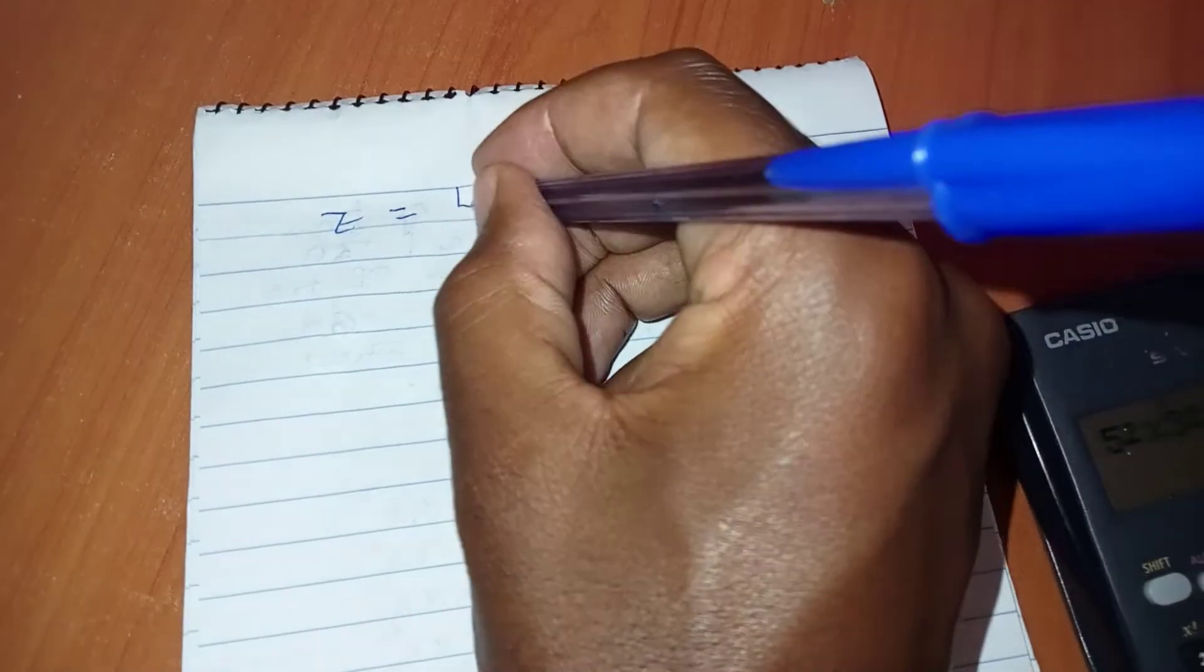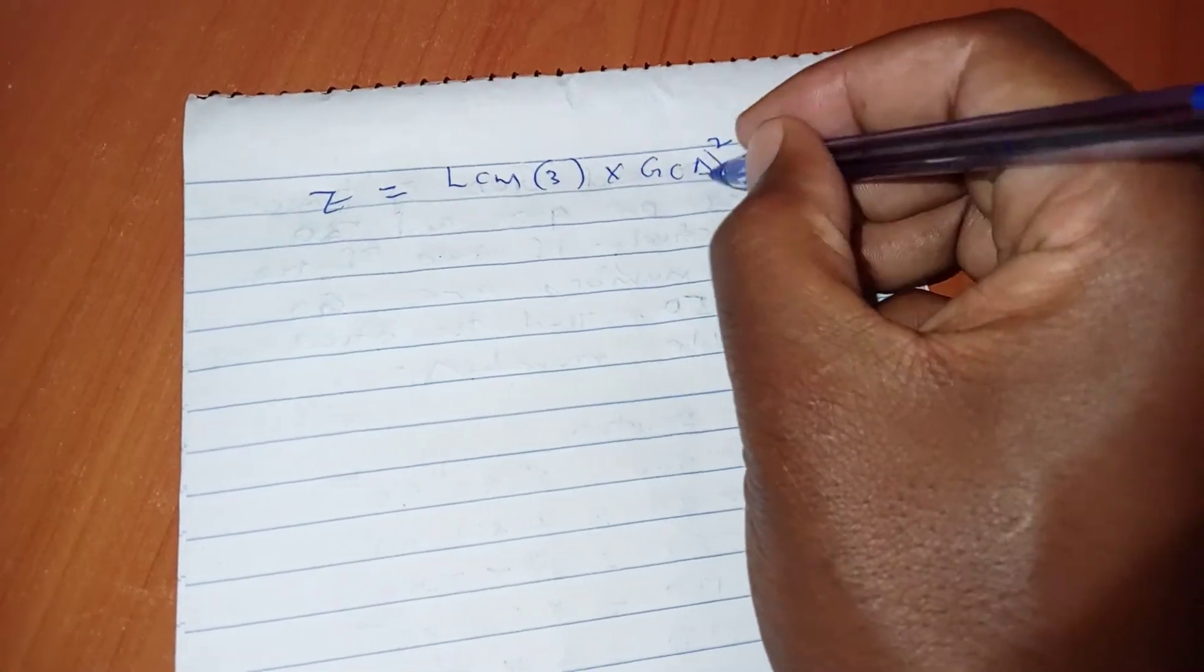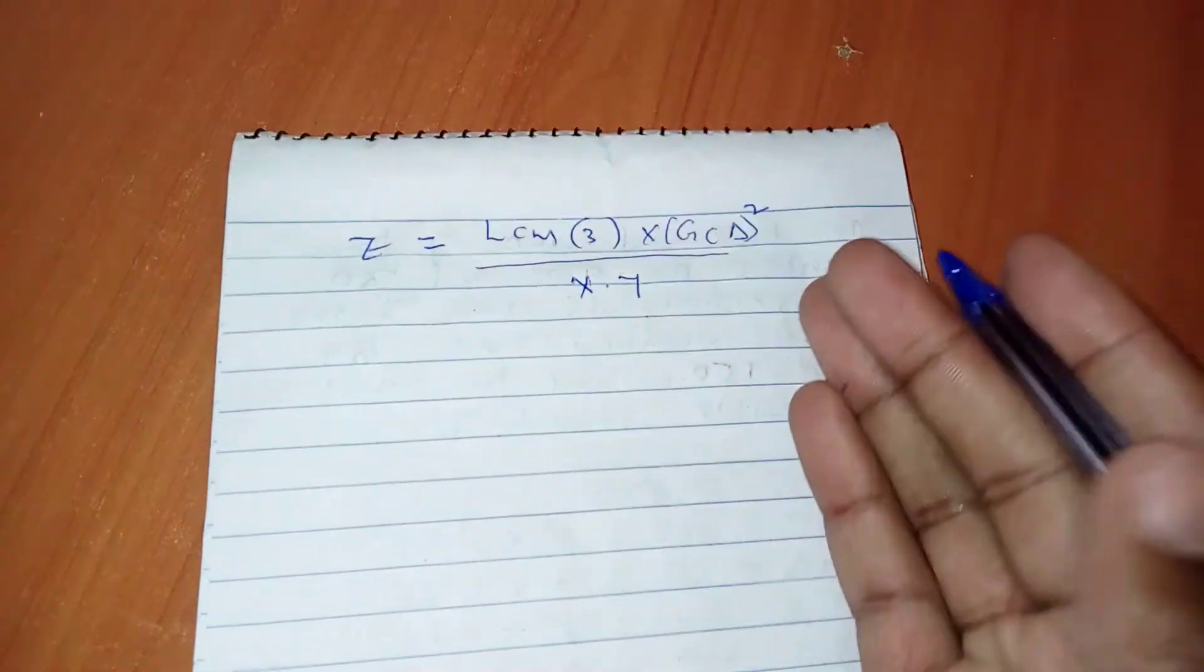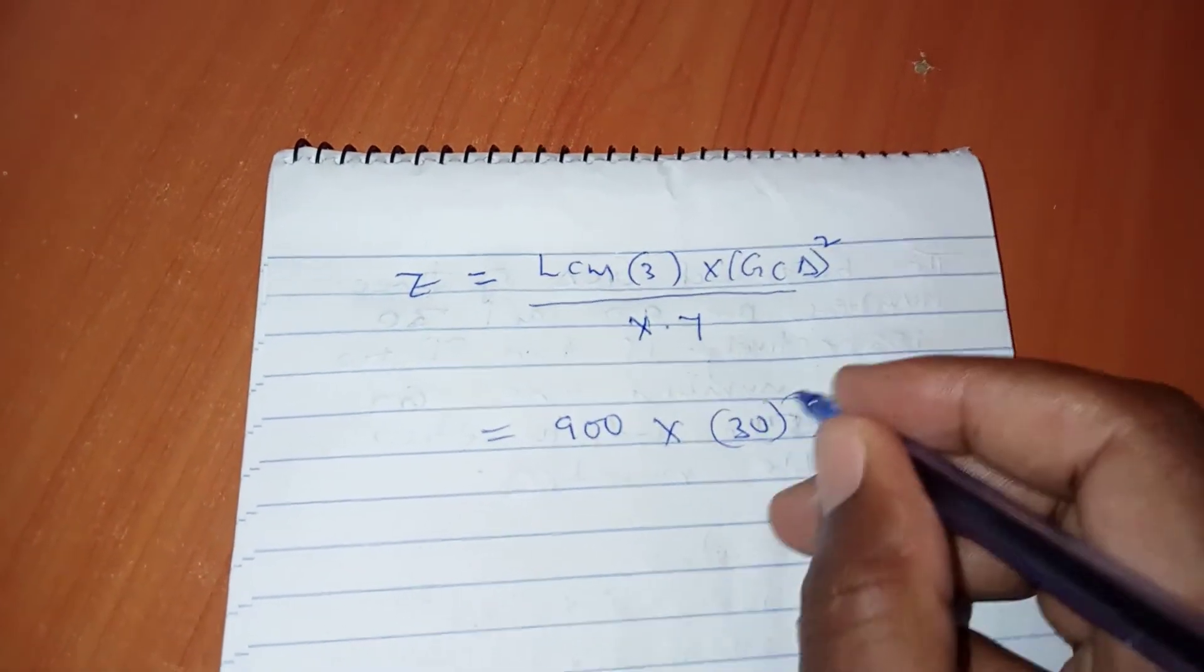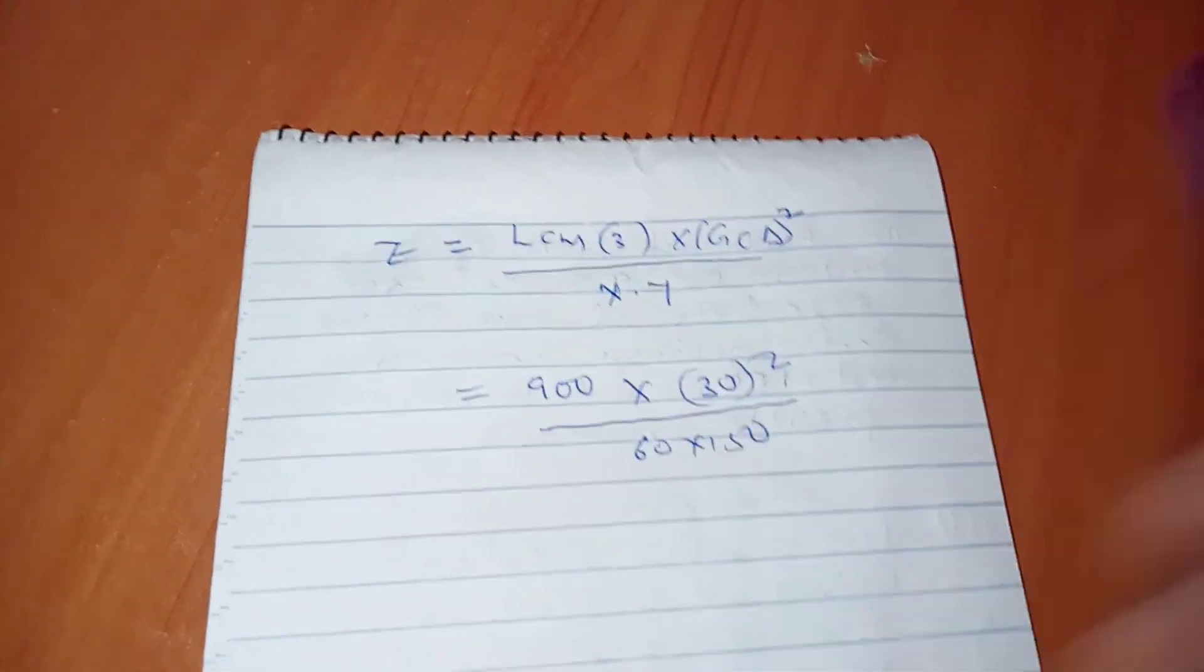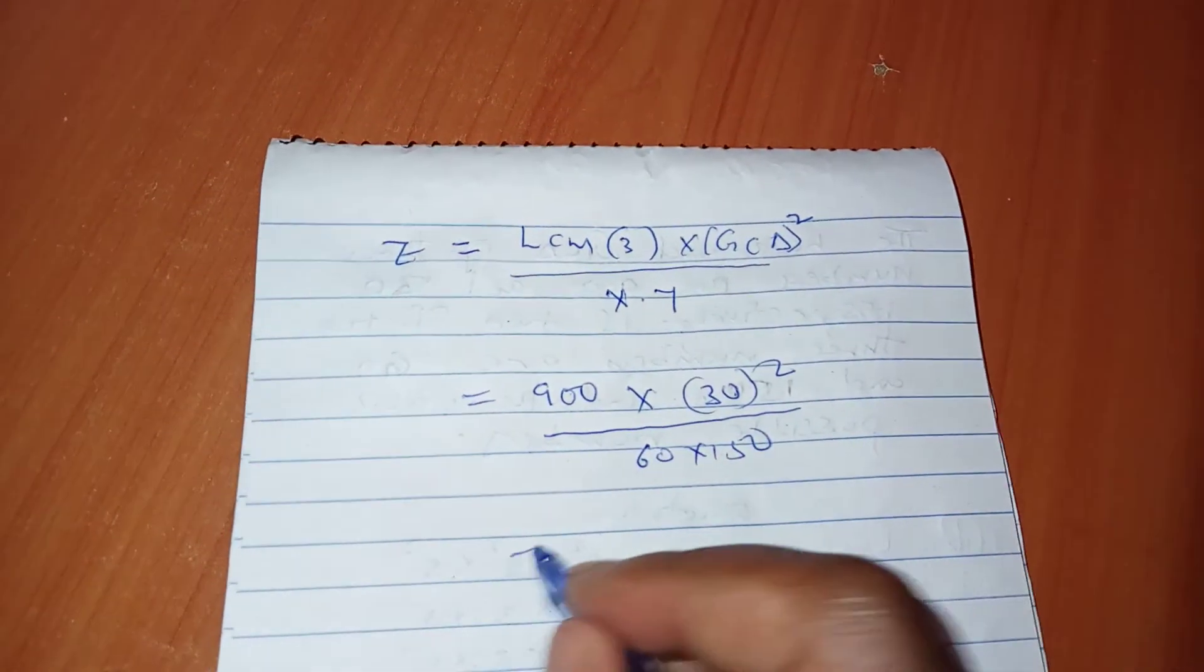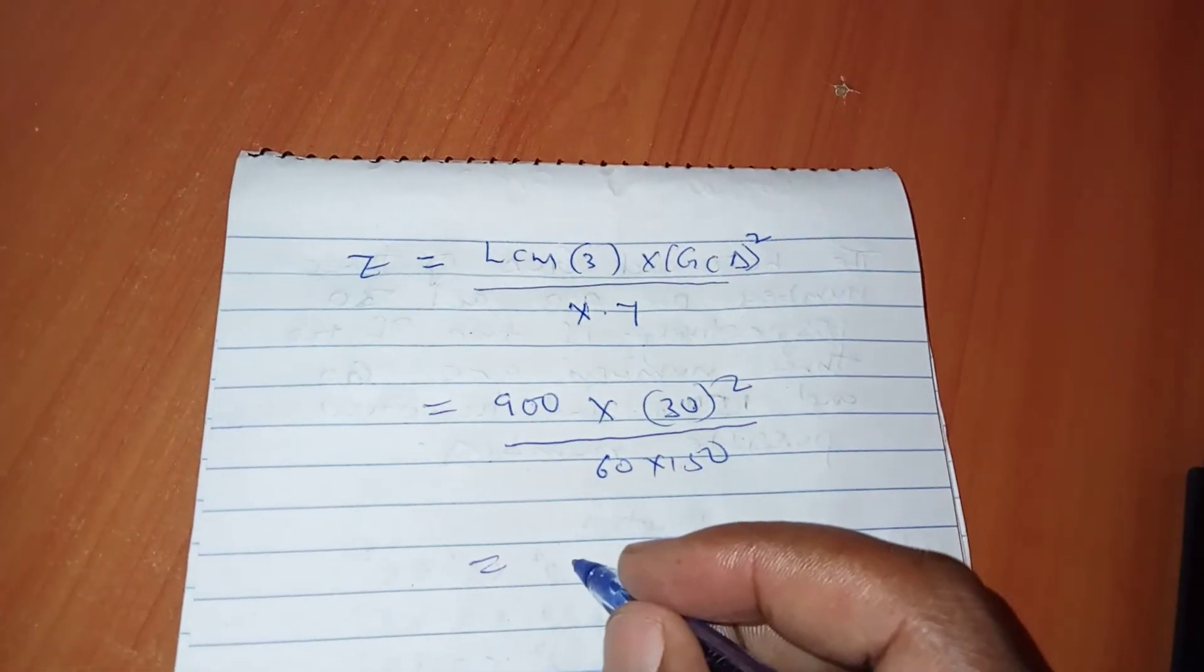We have one more formula. You can take the third number Z as: LCM of three numbers times GCD squared, divided by the product of the two given numbers. So Z = (LCM × GCD²) / (X × Y). The difference is that the previous formula had LCM × GCD divided by the LCM of two numbers, but this one has LCM × GCD² divided by the product of the two numbers.